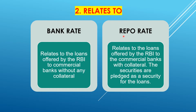Second point: bank rate relates to the loans offered by RBI to commercial banks without any collateral. In the bank rate case, there is no collateral, no securities and no bonds. It is simply the rate of discount. Here in the repo rate, loans are offered by RBI to commercial banks with collateral. The securities are pledged as security for the loans.